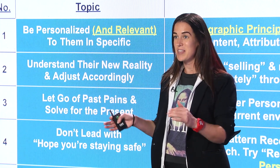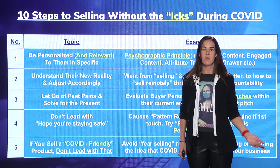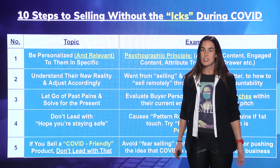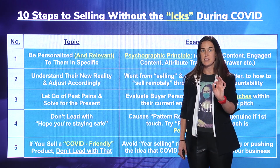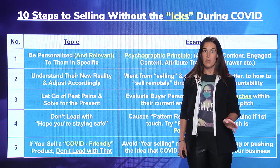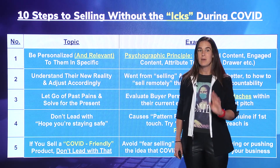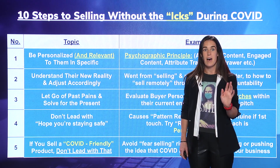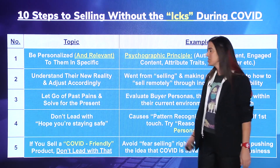Relevance means it's something that you could segment users based on. In terms of selling without the icks during COVID, you want to make sure that you know by default what their buyer persona cares about, what their industry cares about. But you also want to make sure that you know what matters to that person in specific — by something that they wrote, something that they said, or engaged with. This is a way to diffuse your buyer from thinking that you don't know who they are, taking away that icky syndrome.